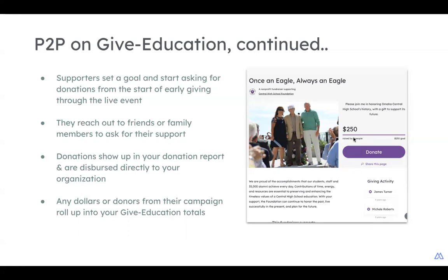Supporters will use the URL of their page to reach out to friends and family — maybe add the link to their Facebook to connect with others. Donations will start to show up in the donation report, and you'll have access to that as well — you'll be able to see all gifts coming in directly through your organization's donation report. All gifts that come in are dispersed directly to your organization, and any dollars and donors from their campaigns will be reflected in your totals on your organization page for the giving event.